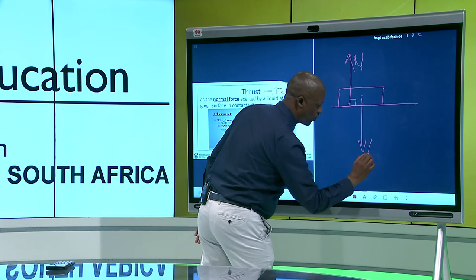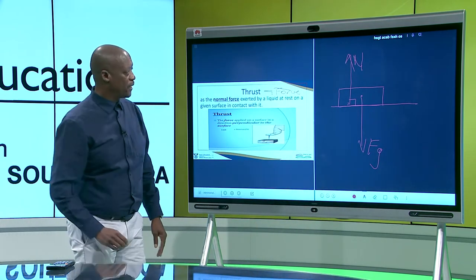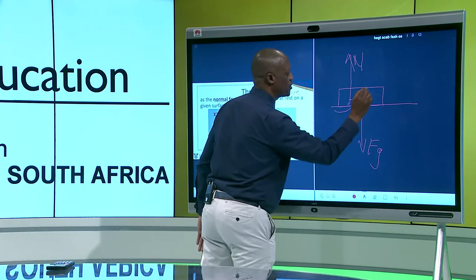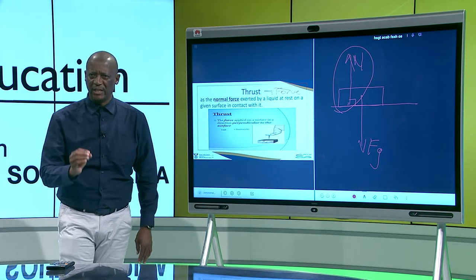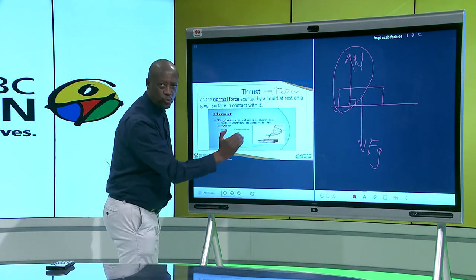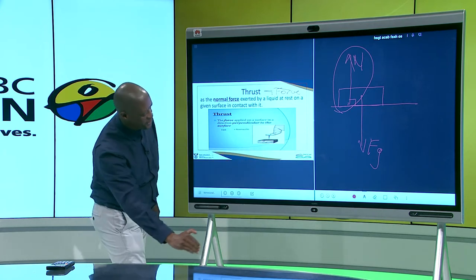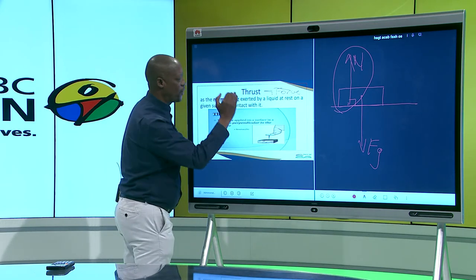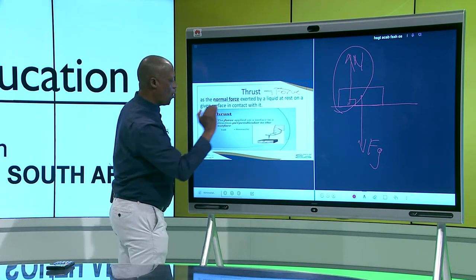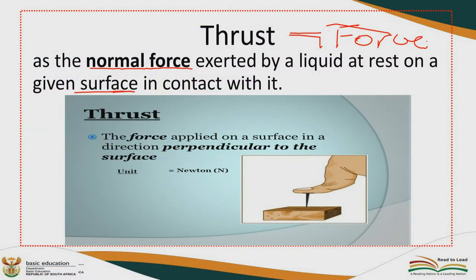We dealt in term one with types of forces. If we have a block placed on a table, there is a force acting downwards. The force acting upwards — perpendicular to the surface — we call it a normal force. So thrust is that normal force exerted by a liquid resting on a given surface in contact with it. This force is perpendicular, and we will deal with it when we go to pressure.